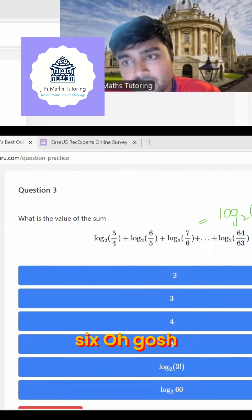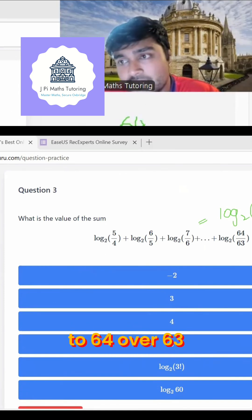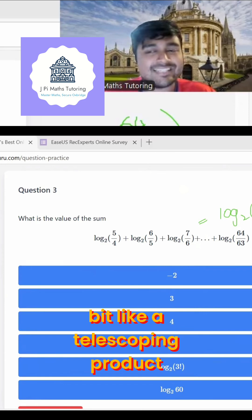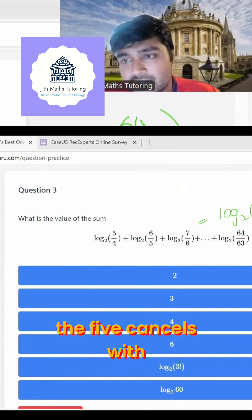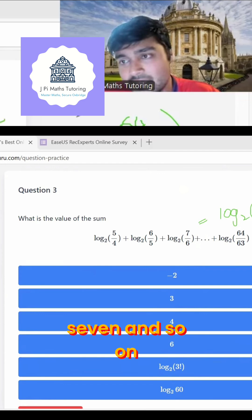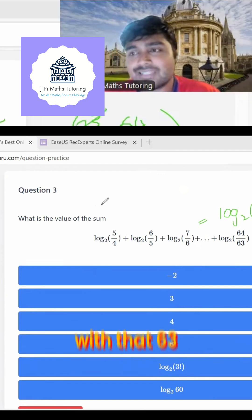five over four times six over five times seven over six all the way up to 64 over 63. And this is a bit like a telescoping product. The five cancels with that five, the six cancels with that six, seven cancels with that seven and so on. This term here will be a 63 over 62. So 63 will cancel with that 63.